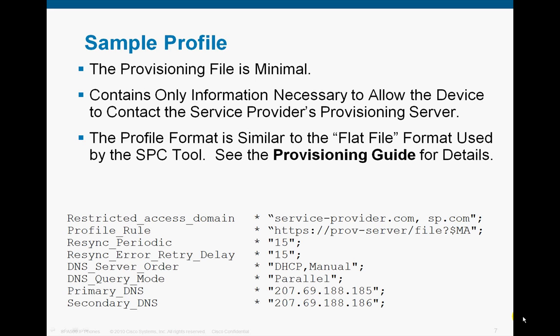Here's a sample profile. Take a look at the first line where it says Restricted Access Domain — it keeps the device associated with the service provider. There's a profile rule showing it's using Secure Socket Layers, or HTTPS, to locate a provisioning server and file named for the device's MAC address, indicated by $MA at the second line on the extreme right. The device will attempt to resync every 15 seconds until it gets its profile; in the event of an error, it will wait 15 seconds. These numbers are configurable. The remaining four lines simply describe how the device resolves server names. In summary, that is the remote configuration process — it's really very simple, yet very efficient. Thank you for your attention.